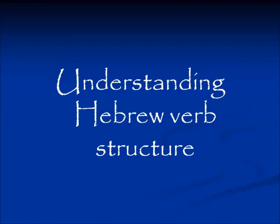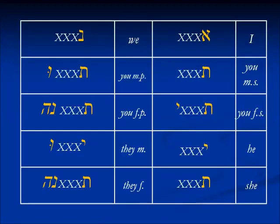Shalom. We are continuing the series on understanding Hebrew verb structure. We are working in the imperfect tense. Remember that the imperfect or future tense of verbs is indicated principally by prefixes, and some of them also have suffixes. This is a chart of those.